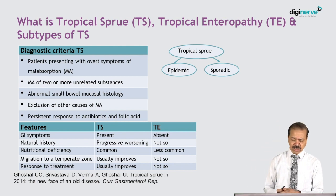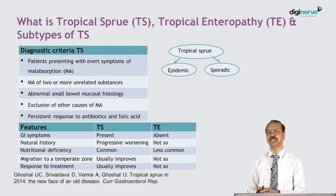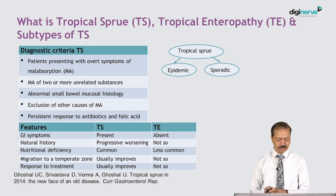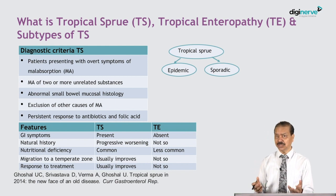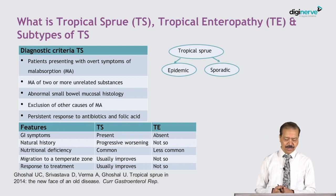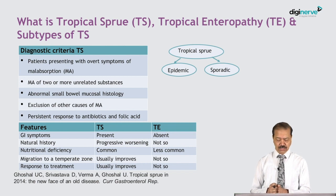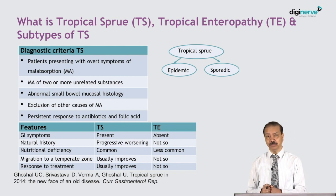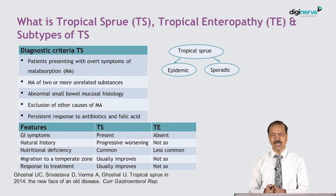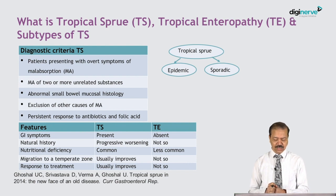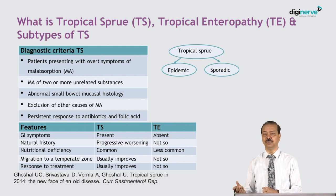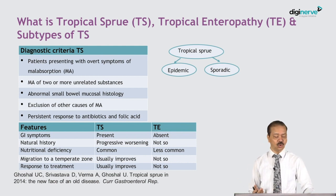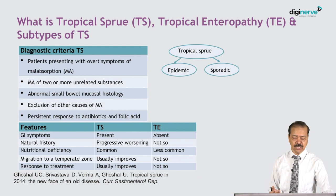Tropical sprue is a worsening condition, while tropical enteropathy is a subclinical histological change. Nutritional deficiency is common in tropical sprue but less common in tropical enteropathy. Migration to a temperate zone may improve tropical sprue but not tropical enteropathy, and antibiotics produce improvement in tropical sprue but not in tropical enteropathy.